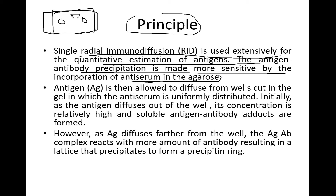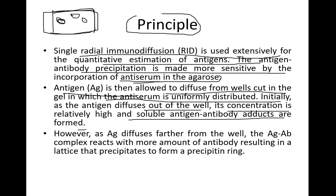The antigen is allowed to diffuse from the wells cut in the gel, in which the antiserum is uniformly distributed. Initially, as the antigen diffuses out of the well, its concentration is relatively high and soluble, and antigen-antibody complexes are formed. These antigens react with the antiserum present in the medium, leading to formation of precipitation circles or rings around the wells.